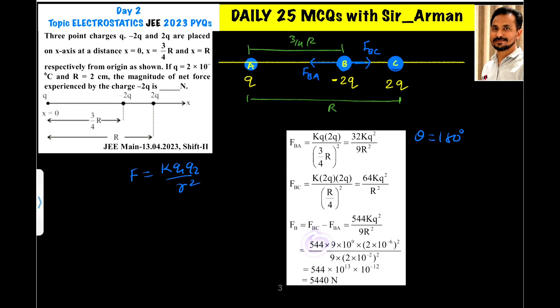So 544, value of k is 9 × 10^9, the value of q is 2 microcoulomb which is given, squared, and 9, and the value of r is given 2 centimeter, that is 2 × 10^-2. If you solve this you will get 5440 newton.